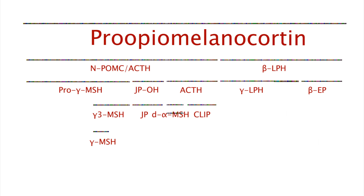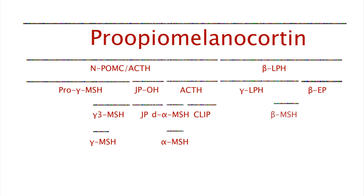D-alpha-melanocyte-stimulating hormone is further processed to alpha-melanocyte-stimulating hormone, which controls pigmentation in dermal melanotrophs, but in the brain suppresses appetite. Gamma-lipotropin can be further cleaved into beta-melanocyte-stimulating hormone, a hormone involved in the regulation of energy balance, while beta-endorphin can be cleaved once to become gamma-endorphin and cleaved again to become alpha-endorphin. All endorphins modulate pain, but through different receptors.